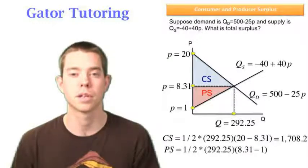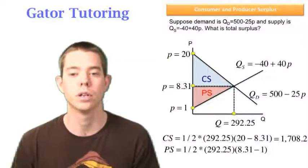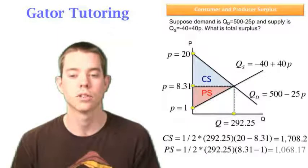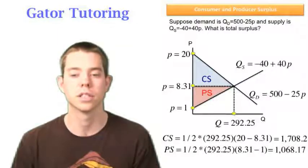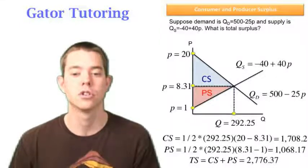Producer surplus is one-half base times height, the base is the same, 292.25, and the height is the difference between 8.31 and $1. So when I solve that, I get 1,068.17. So total surplus is just the addition of those two things, in this case, $2,776.37.